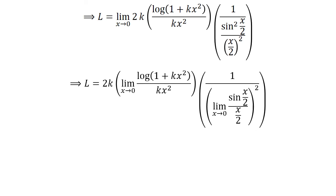After application of properties of limits, we can rewrite the above expression as l is equal to 2 times k times the limit of natural log of 1 plus k times square of x upon k times square of x, times 1 upon square of the limit of sin of half of x upon half of x, as x approaches 0.